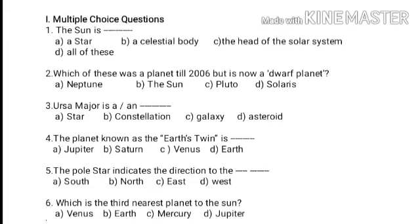Next: the planet known as the Earth's twin is — first option, Jupiter; second option, Saturn; third option, Venus; fourth option, Earth. Which is the correct answer? Venus is the correct answer.